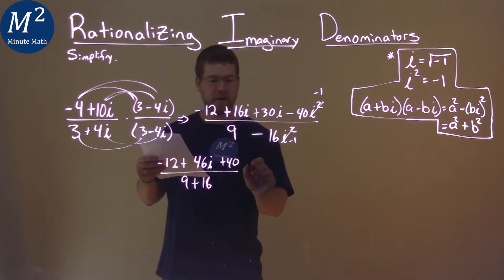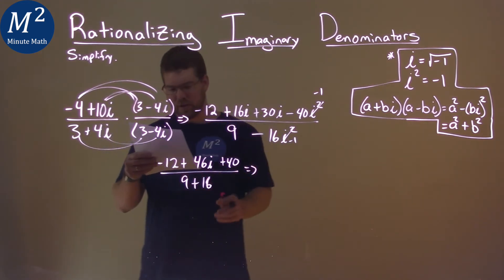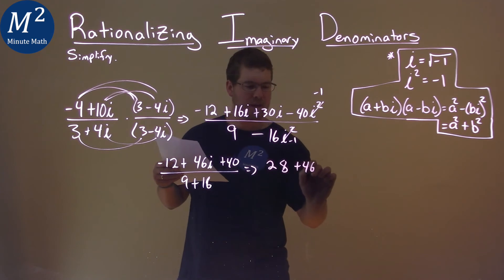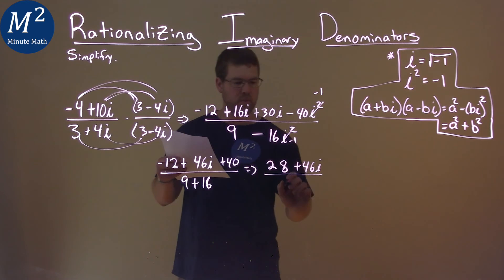So now let's keep simplifying, combine our like terms. Negative 12 plus 40 is positive 28, and then we bring the 46i still over, divided by here, 9 plus 16 is 25.